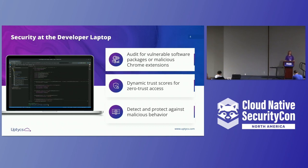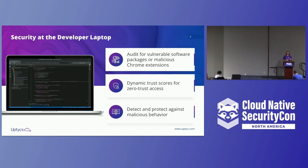Number two: dynamic trust scores for zero trust access. In real time, dynamically assigning zero trust scores — assessing the identity and health of a developer's laptop as it's trying to access critical resources or infrastructure. This is a big one because security should really enable our development teams. Zero trust access is a great way to break down roadblocks and enable teams working from untrusted or lightly secured home networks as everyone works remotely nowadays.